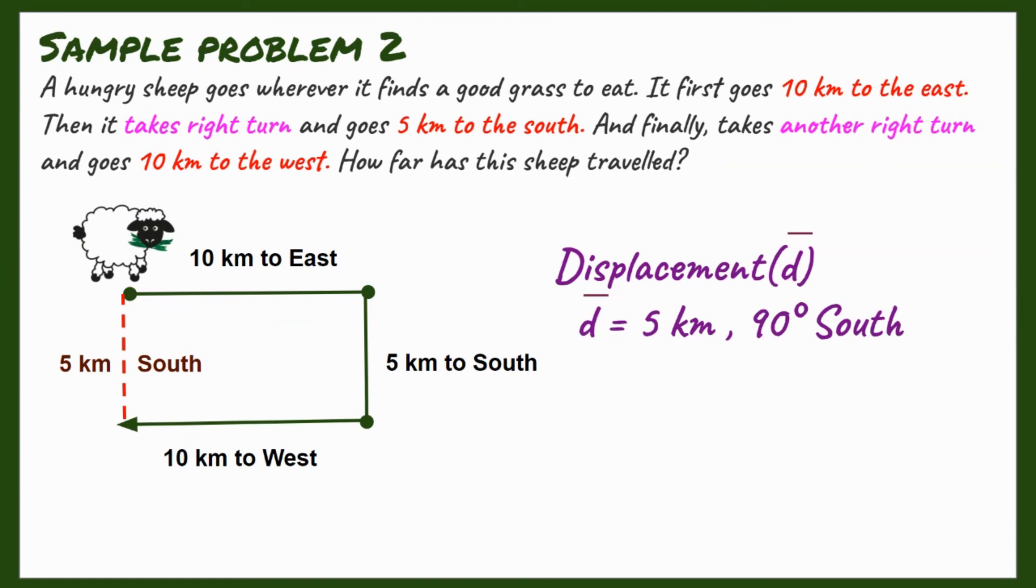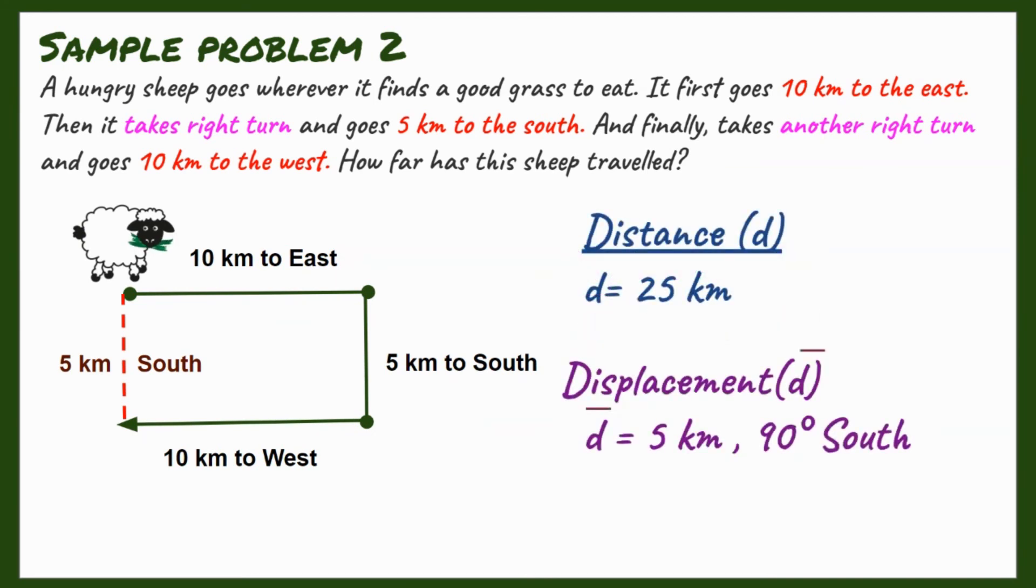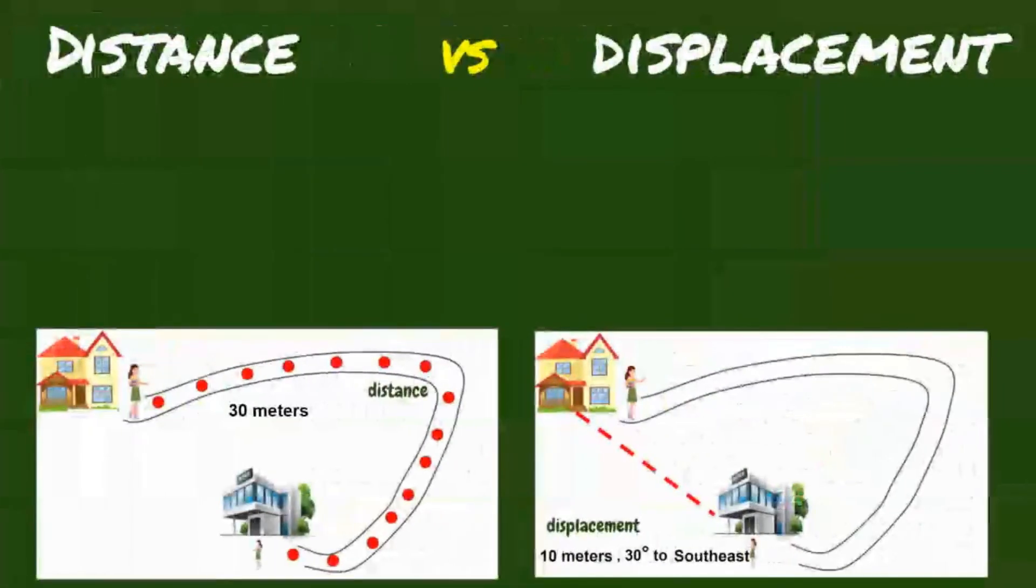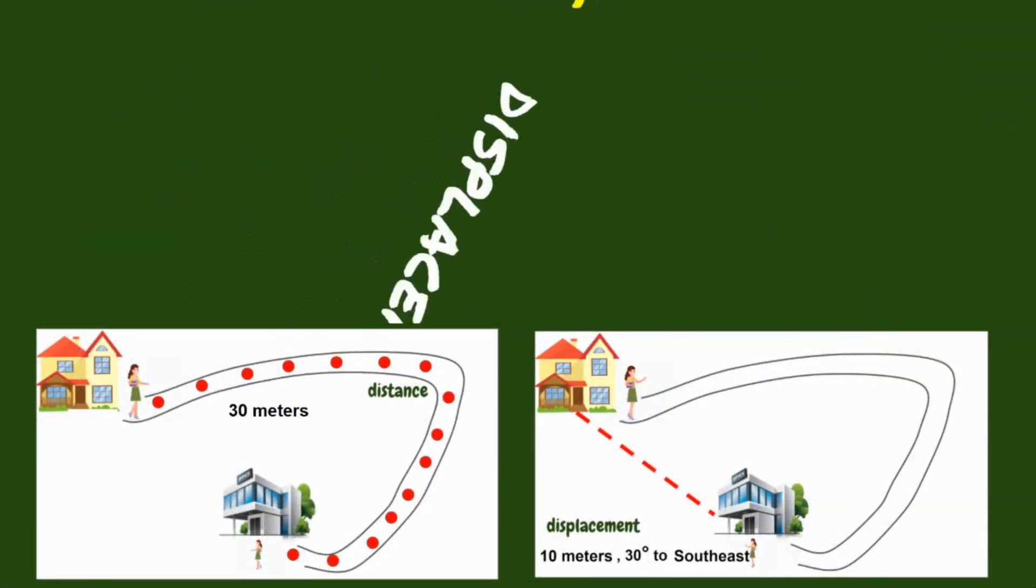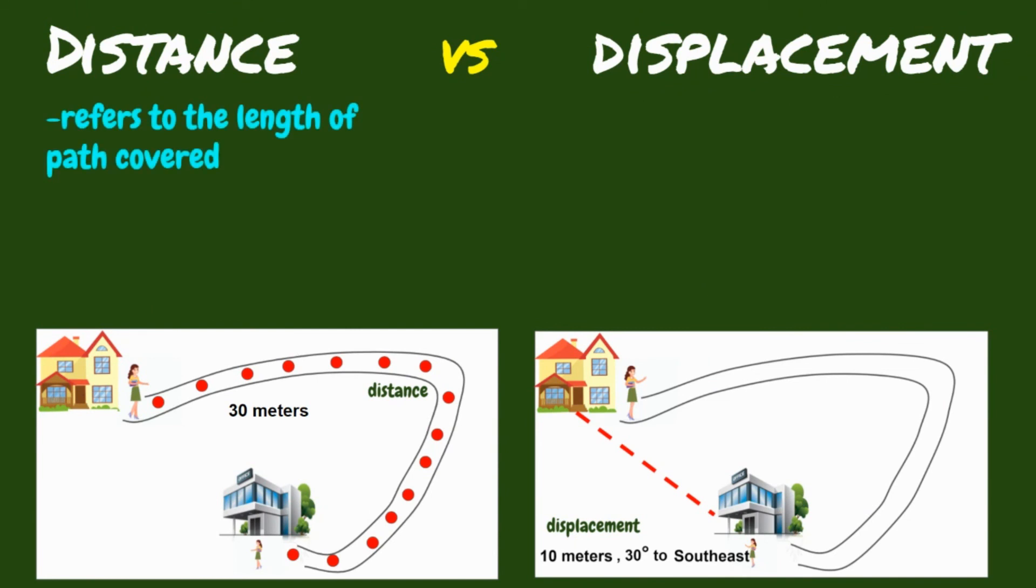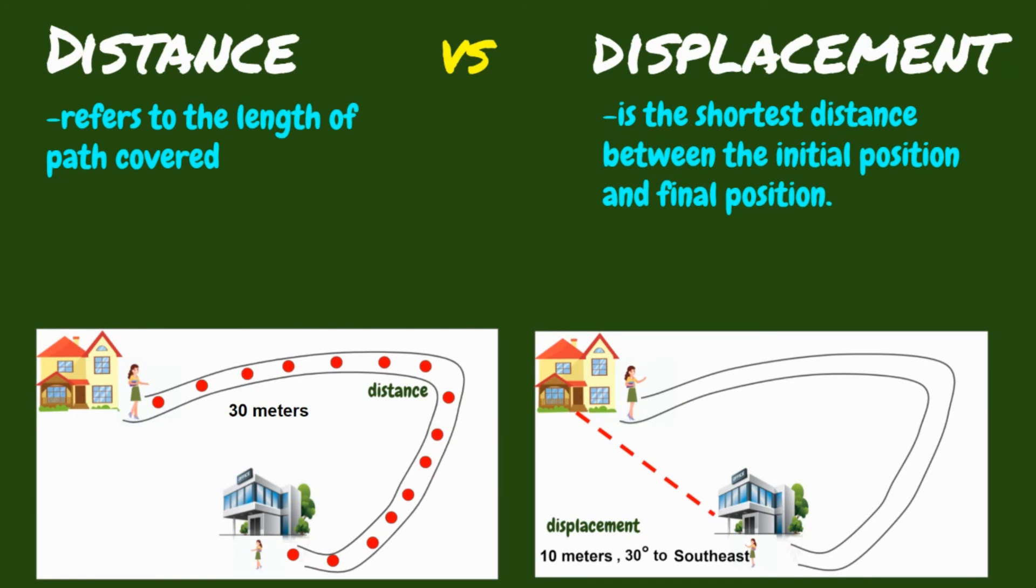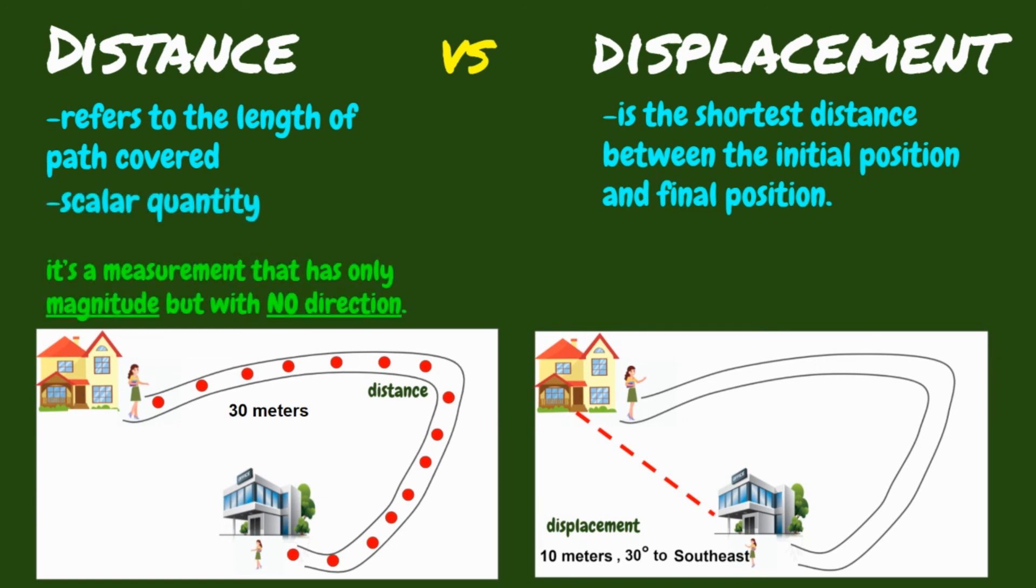Okay, to sum up what we have learned today, let us differentiate distance and displacement. Distance refers to the length of path covered. On the other hand, displacement is the shortest distance between the initial point and the final point. In short, it is the change in position. Distance is a scalar quantity, which means it's a measurement that has only magnitude but with no direction. While displacement is said to be a vector quantity, which means it's a measurement that has magnitude and direction.